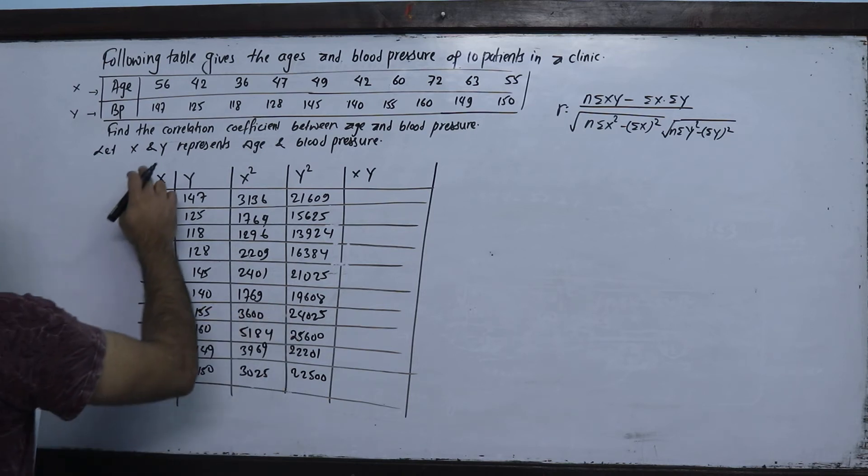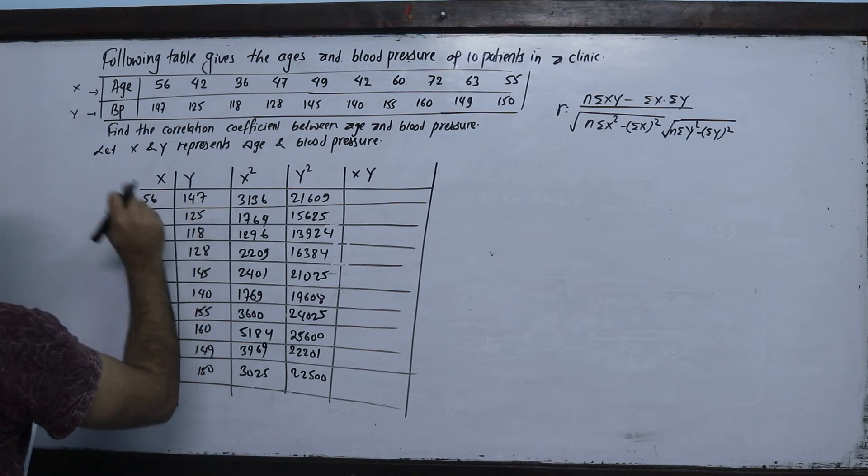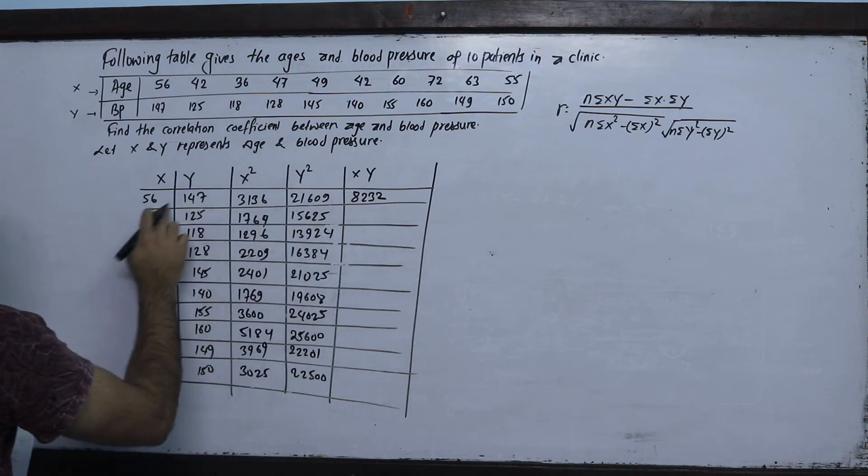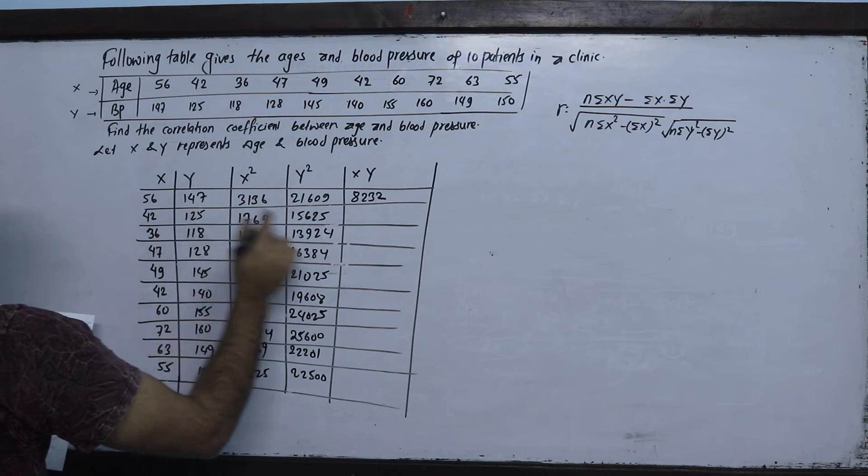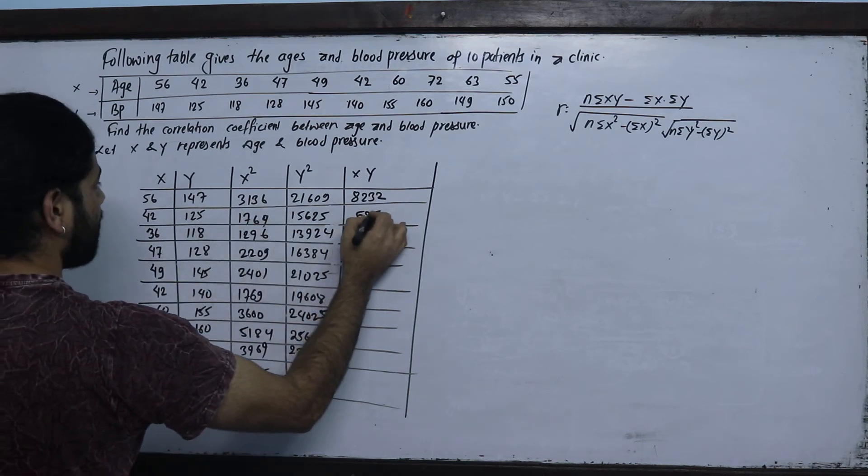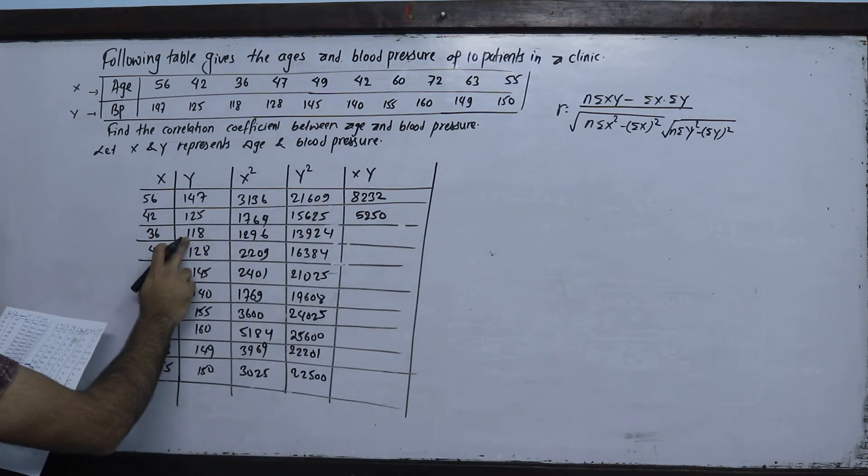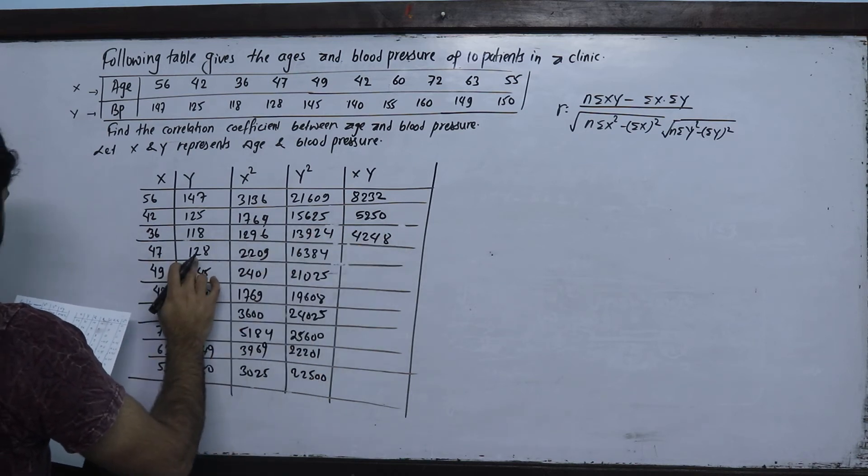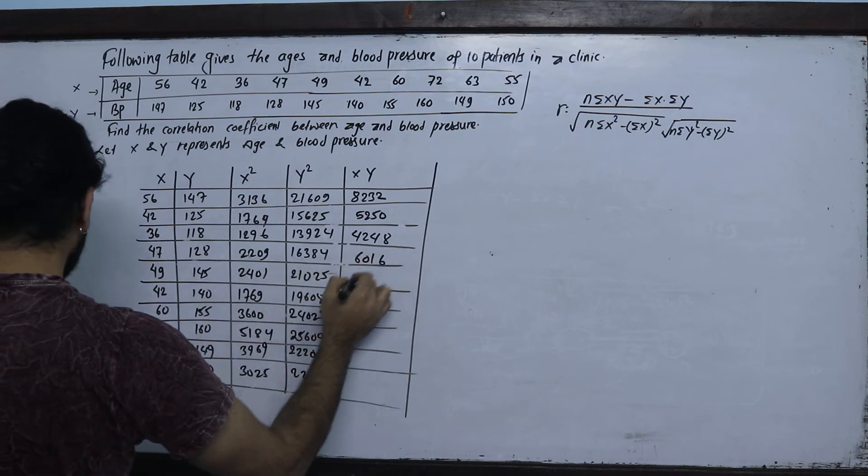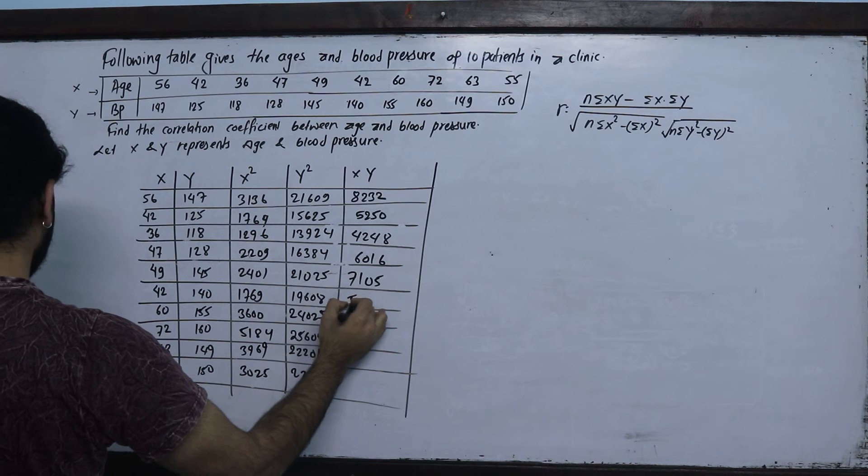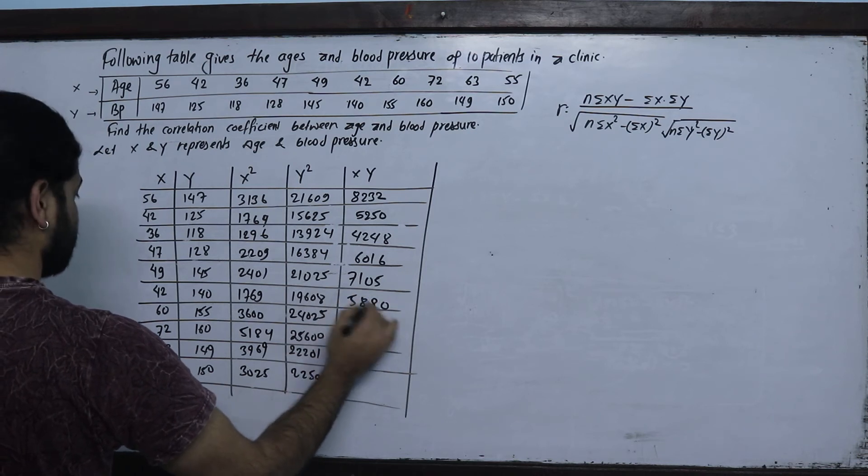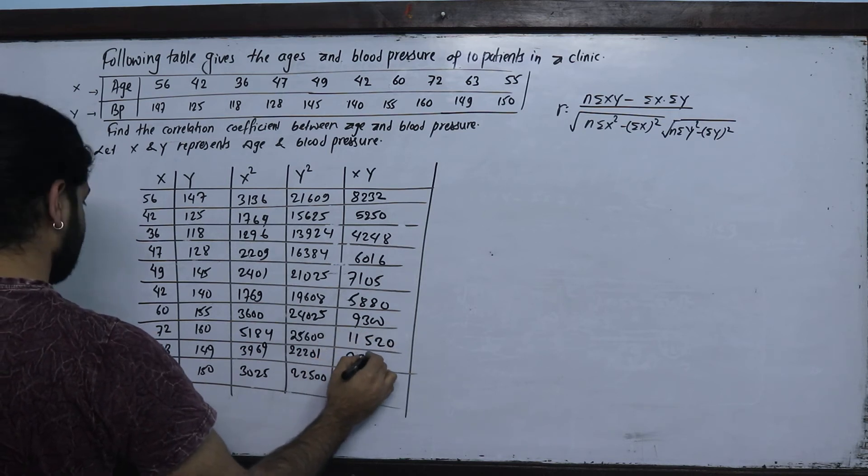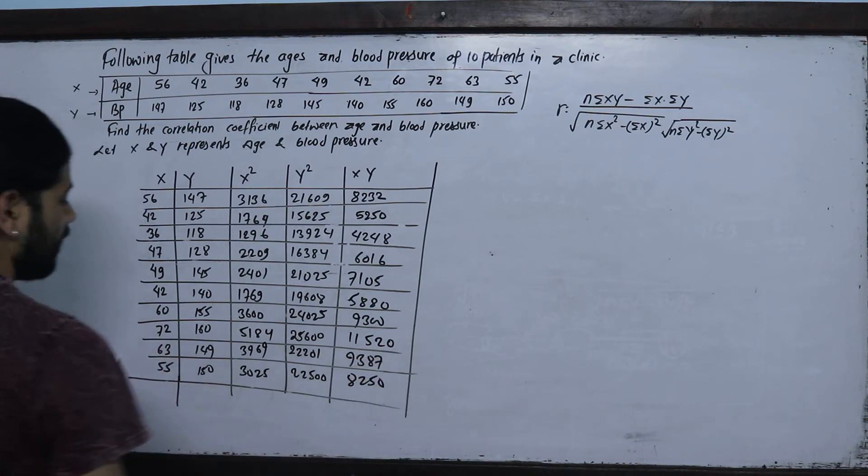Now x into y. 56 into 147 equals 8232, 42 into 125 equals 5250, 36 into 118 equals 4248, 47 into 128 equals 6016, 49 into 145 equals 7105, 42 into 140 equals 5880.